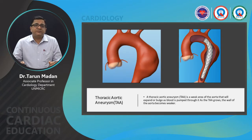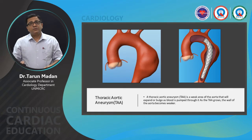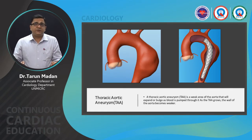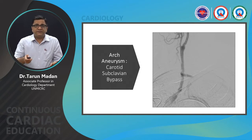A thoracic aortic aneurysm is a weak area of the aorta that expands when blood is pumped through it, causing all three layers — tunica intima, media, and adventitia — to bulge out. Treatment involves endolining the aorta with a covered stent graft. In this case, both the left carotid and innominate artery were de-branched, the innominate was ligated, and a bypass graft was placed from the left subclavian to the left common carotid in the supraclavicular area.